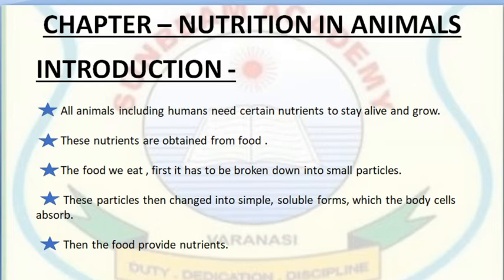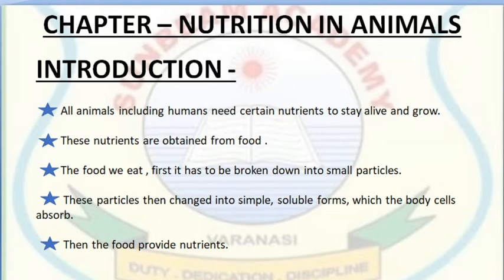It has to be broken down into small particles and these particles must then be changed into simple soluble forms which the body cells can absorb. Only then can food provide nutrients. To obtain the nutrients from food, different processes are involved in the process of nutrition in animals. Nutrition is a process in which the food we eat gets digested, absorbed, and finally utilized to produce energy in our body.